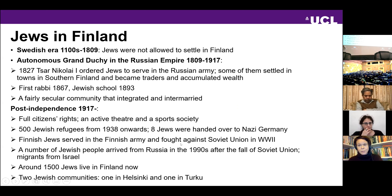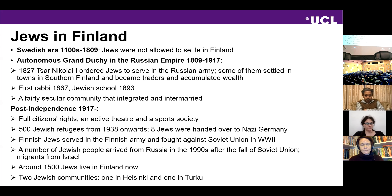Finland was part of Sweden until 1809, during which time Jews were not allowed to settle there. Finland then became an autonomous Grand Duchy in the Russian Empire, and in 1827 Tsar Nikolai the First ordered Jews to serve in the Russian army. Some ended up settling in towns in southern Finland and became traders, accumulating some wealth. The first rabbi arrived in 1867, and there's been a Jewish school from 1893. From the start it was a fairly secular, very small community that integrated and intermarried — though some were also expelled during this period.